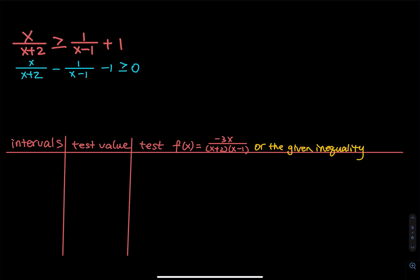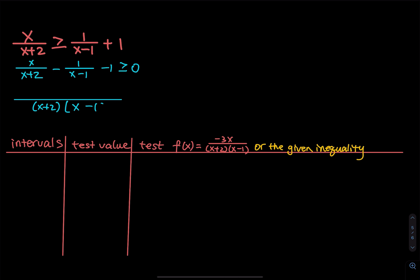Let's get a common denominator, and then I will claim the left-hand side to be my function. For the common denominator, I will use x plus 2 times x minus 1. So the numerator becomes x times (x minus 1) minus 1 times (x plus 2). For the negative 1 term, you will have to subtract that product of x plus 2 and x minus 1. The whole thing is greater than or equal to 0.